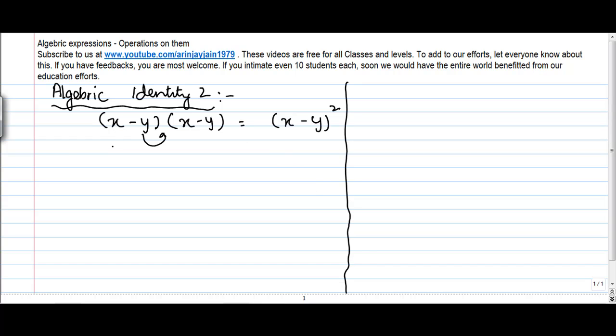Now if I were to solve this, what will I get? I will get x into x minus y, first term multiplied by the second polynomial, minus y into x minus y.